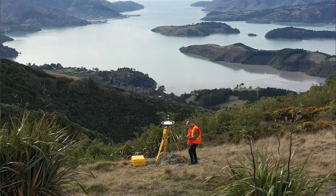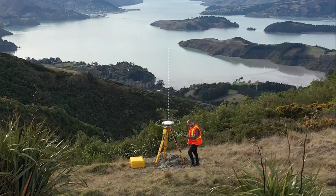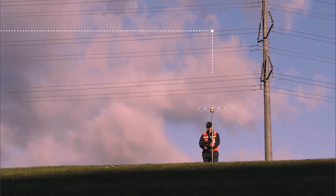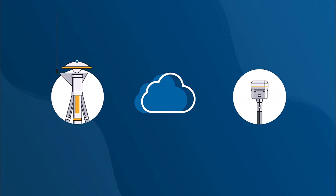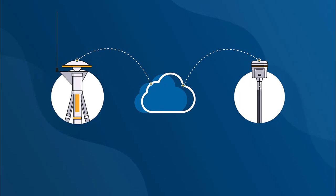IBSS with Trimble Access provides a straightforward and efficient way to stream RTK corrections over the internet from a base station to a rover. Internet streamed corrections provide superior range compared to traditional radio-based systems and are not affected by physical obstructions like buildings.